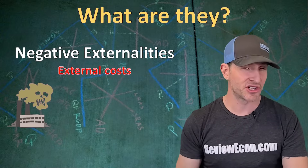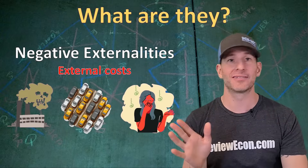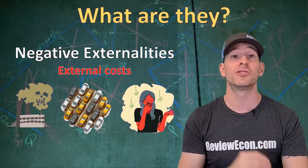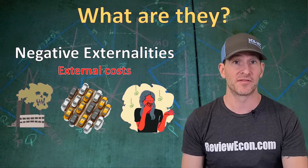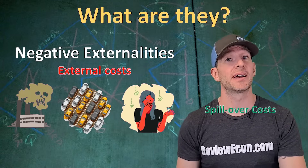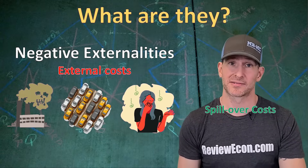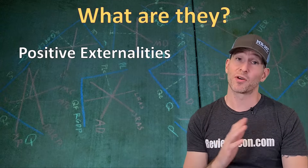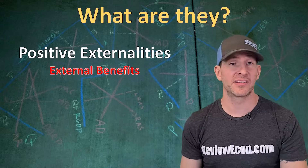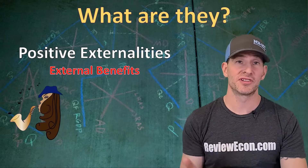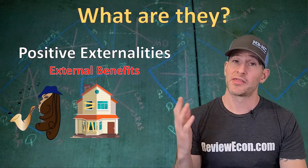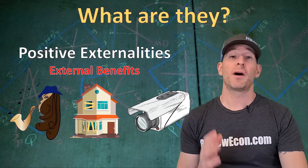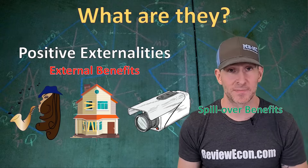Negative externalities could be pollution, traffic congestion, odd smells, and countless other things where there is a cost or a drawback that people who don't buy or produce the product face as a result of this product. Negative externalities are sometimes called spillover costs. Positive externalities on the other hand are external benefits that fall on people who don't buy or produce the product — those could come in the form of beautiful music filling a local park, the renovation of a neighborhood, or local security cameras that monitor an area.